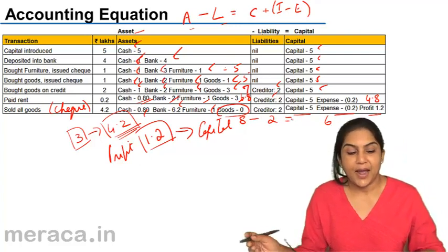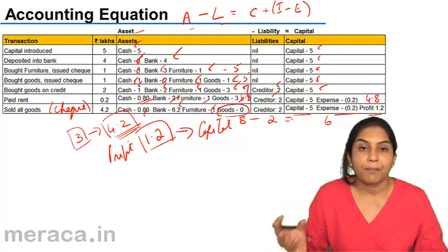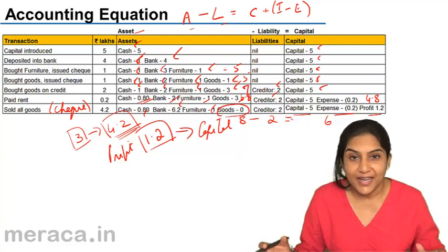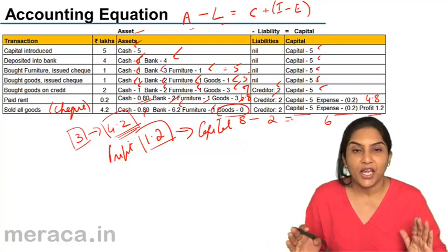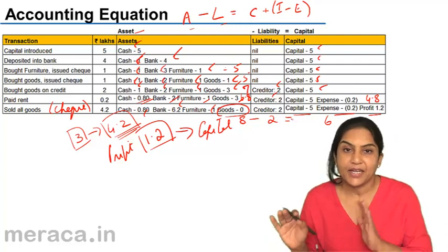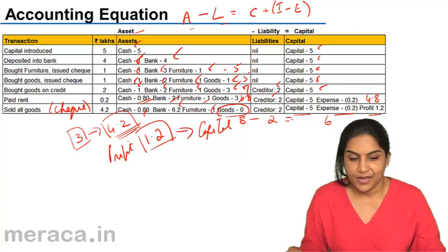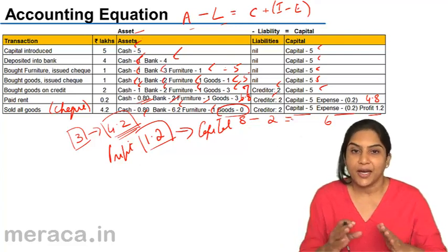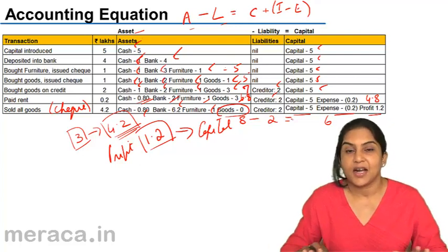So we see capital introduced, money deposited into bank, buying of furniture, buying of goods for cash or on credit, paying rent, selling the goods and making a profit. In all these situations, our accounting equation of asset minus liabilities equal to capital is always satisfied. This is the accounting equation and the rules of passing accounting entries or the double entry system is based on this accounting equation.